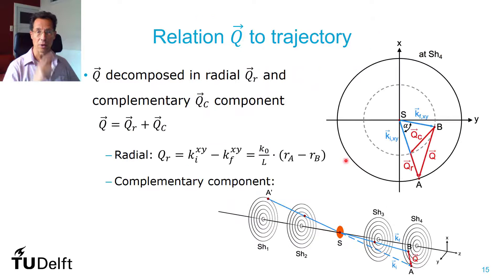Now the second thing you have to do is to relate the wave vector transfer to the trajectory. Now, if you look at your incoming Q and your outgoing Q, then you can decompose it into the radial part and the complementary part. It's not completely tangential, but close to it.